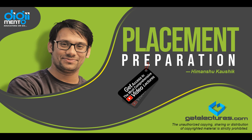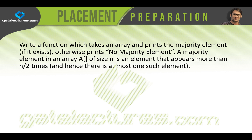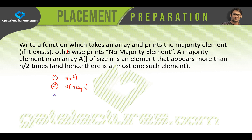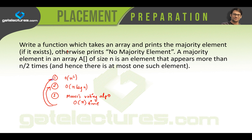We are continuing our discussion on finding the majority element. We have already seen two approaches: the first approach used loops and took O(n²) time, and the second approach took O(n log n) time. Now we are going to see the third algorithm, which is Boyer-Moore's Voting Algorithm, and this algorithm is going to take O(n) time, making it better than both previous algorithms.